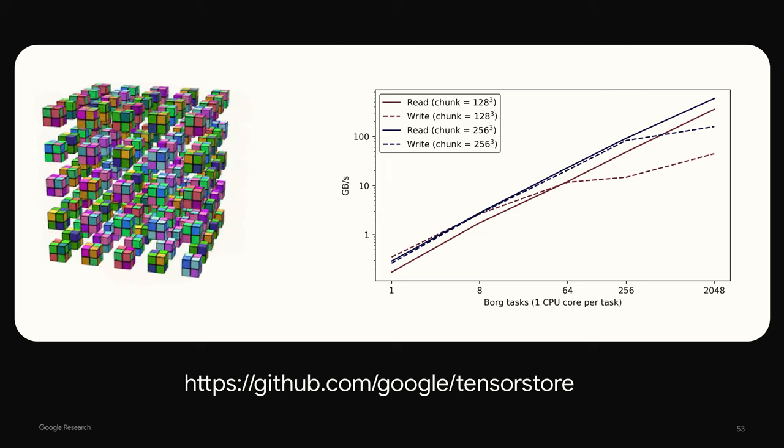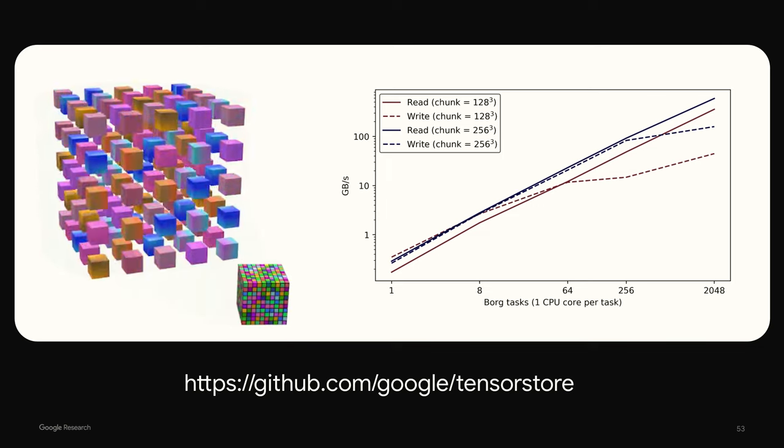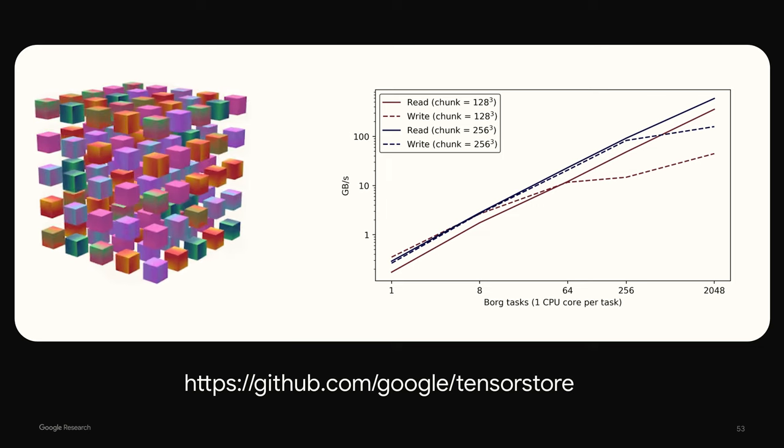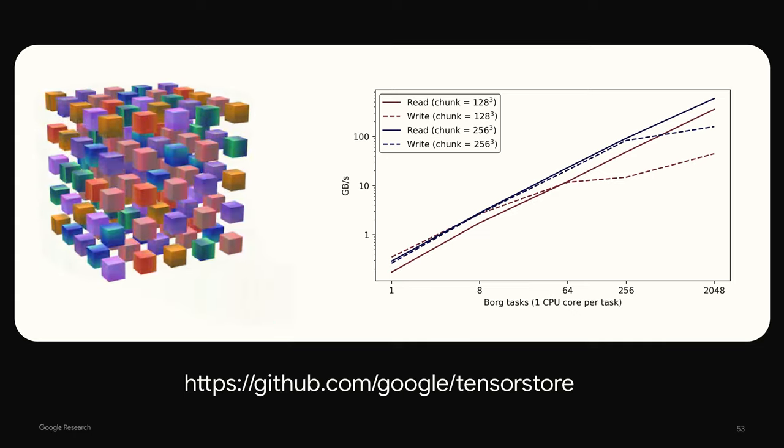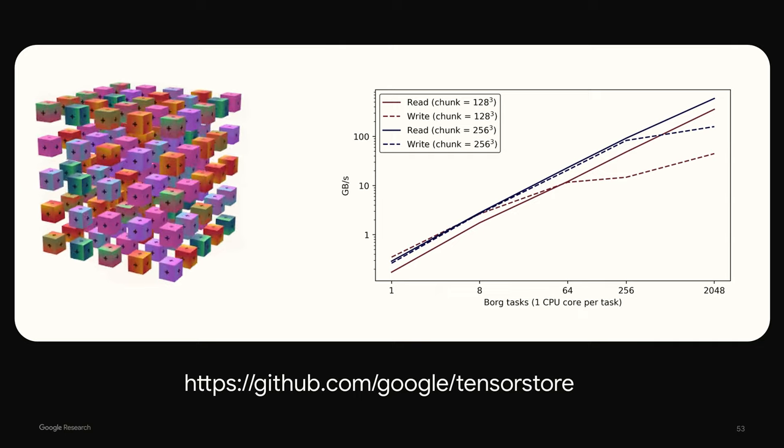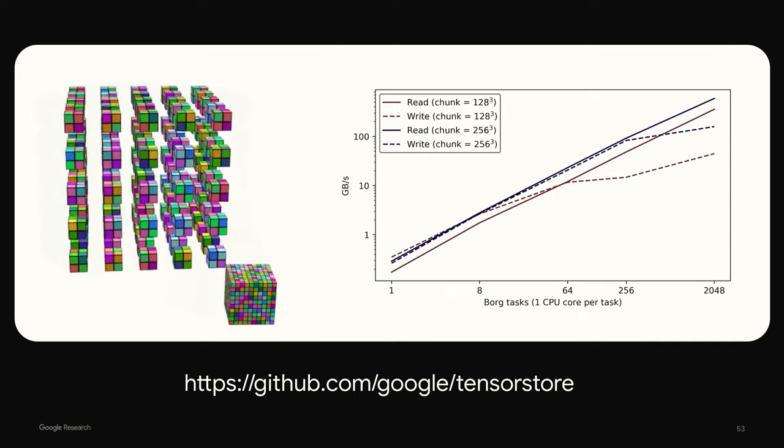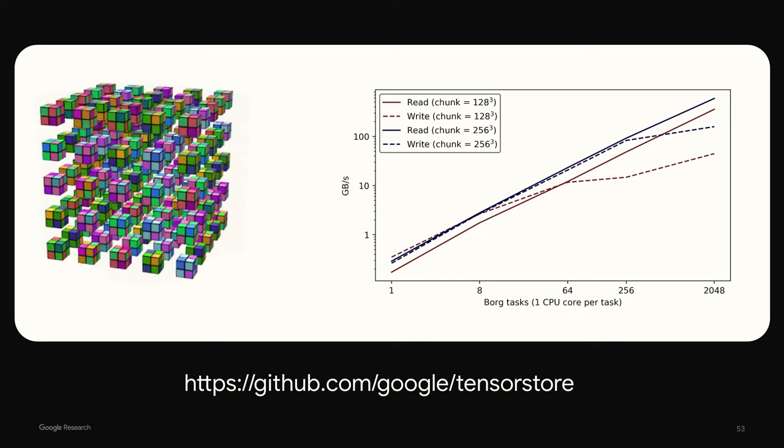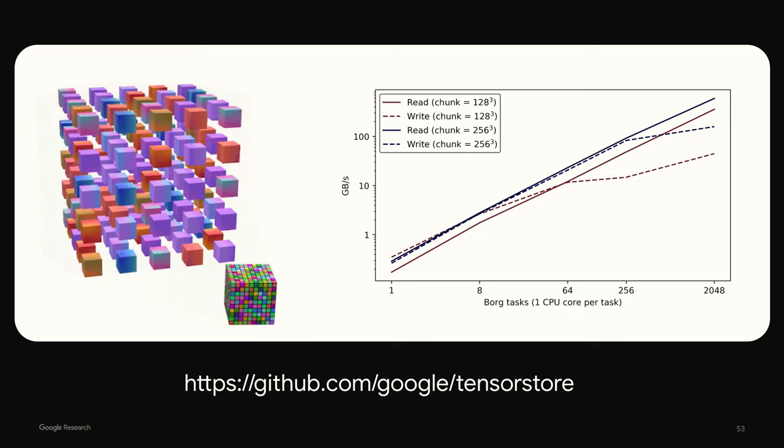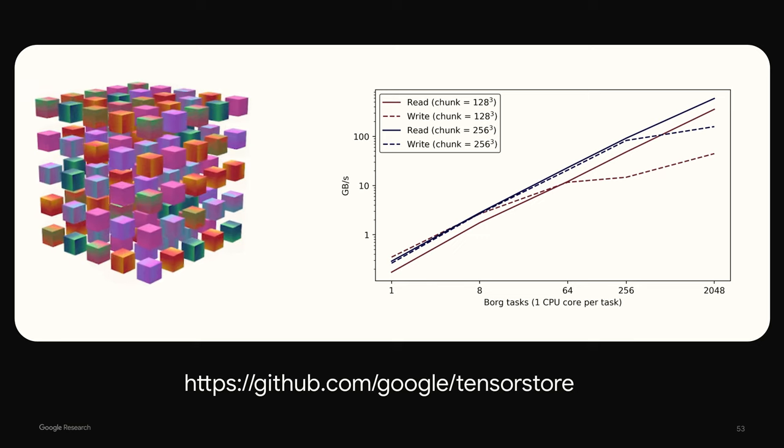In the course of our research, we've also advanced technologies that have applications far beyond neuroscience. For example, to help manage huge data sets, we created TensorStore, open source software for working with petabyte scale multi-dimensional data sets from thousands of computers at the same time. TensorStore is now used to help train nearly all of the large language models developed at Google and is helping researchers around the world solve problems in their own domains.